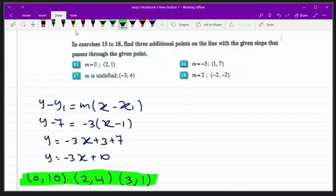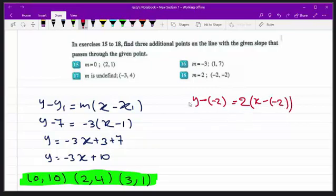So similarly we can do for question 18. y minus y1 is equal to m times x minus x1. y minus negative 2 is equal to 2 times x minus negative 2. Okay, it will be y plus 2 is equal to 2x. Negative with negative will be positive, plus 4.